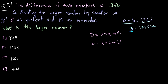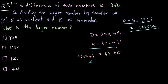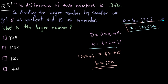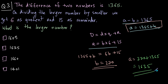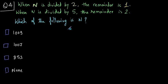From the equation a minus b equals 1365, we get a equals 1365 plus b. We can now equate the two expressions for a: 1365 plus b equals 6b plus 15. Solving this equation gives b equals 270. Then a equals 270 plus 1365, which comes out to be 1635. So the correct answer is option B: 1635.